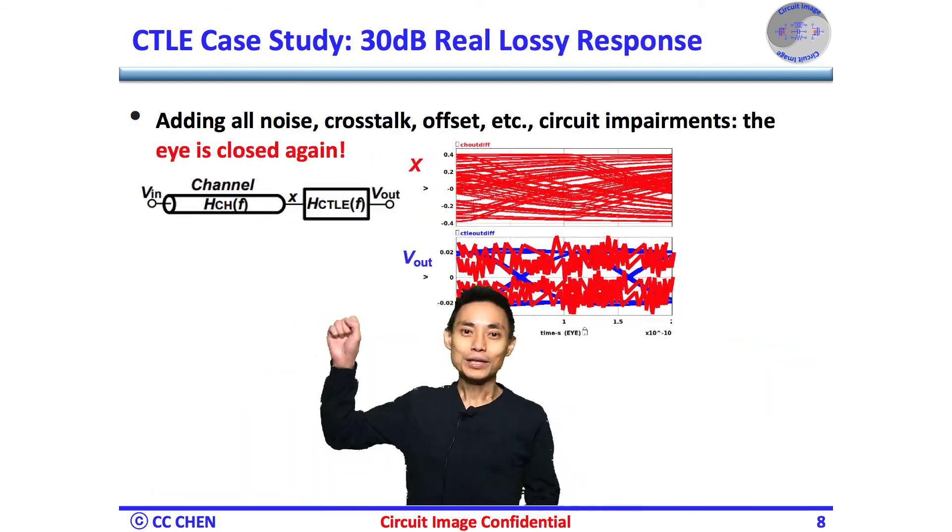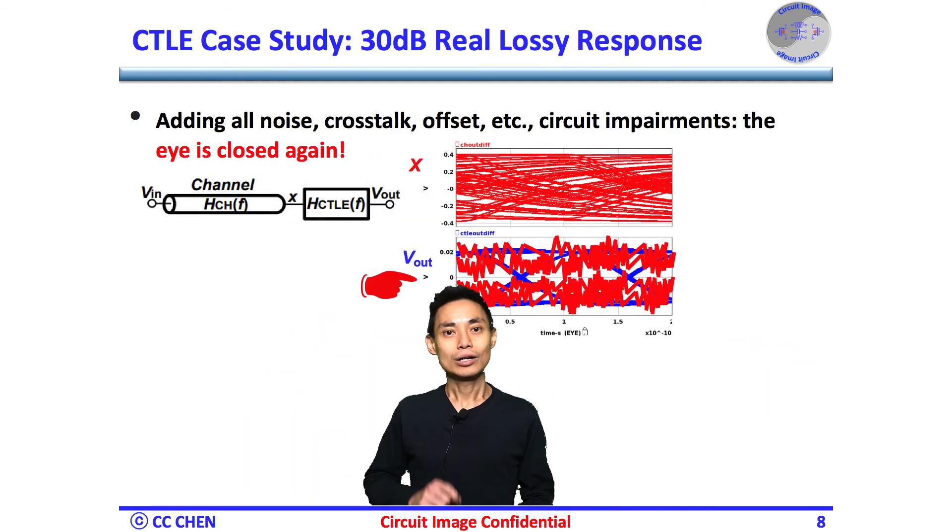Why? Bingo! Due to the noise, crosstalk, offset, etc., circuit impairments were not well included in the simulation or model in this case study. So this could be a good image showing our circuit image could be more useful than the simulation result only, which could miss a lot of things.